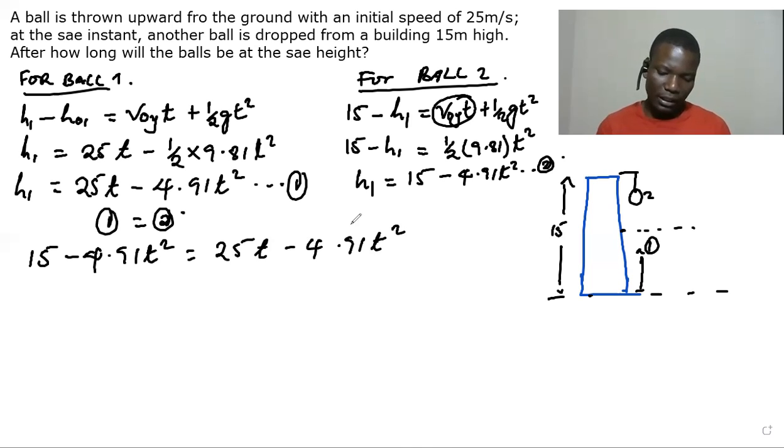So you are going to see that the 4.91 t squared terms will cancel. And then what we're going to remain with is 15 equals 25t.